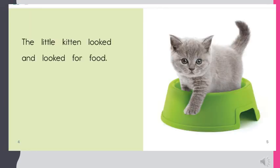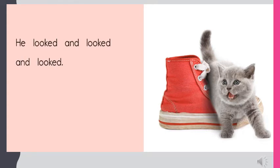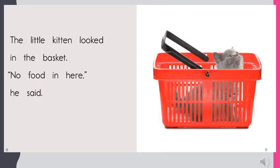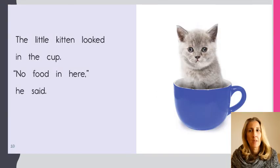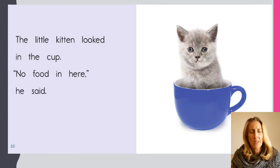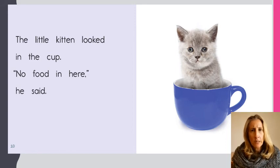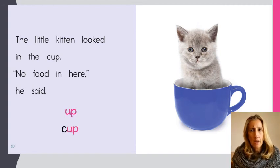'The little kitten looked and looked for food. He looked and looked and looked. The little kitten looked in the basket. No food in here, he said. The little kitten looked in the...' Hmm, I don't know — I'm kind of stuck on that word. I think I see a spelling pattern for a word family I know in there. U-P says 'up,' and there's a C at the beginning. The little kitten looked in the 'cup.'